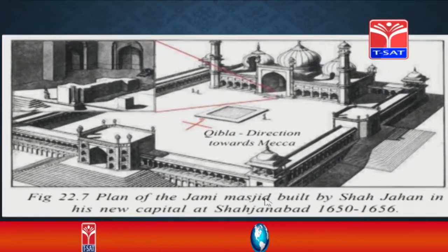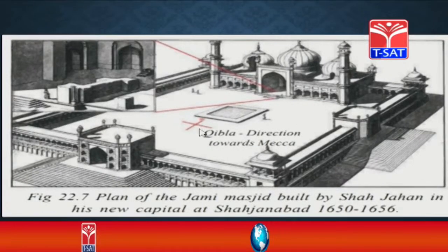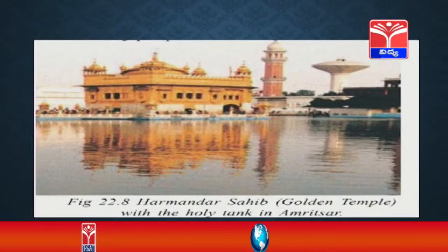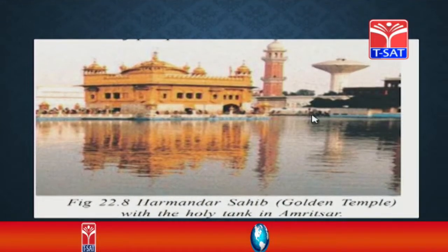The Jami Masjid was built by Shah Jahan in his new capital Shahjahanabad in the year 1652–1656. If you closely observe this image, there is the Qibla direction — the direction towards Makkah. The Qibla direction is the direction to which all Muslims pray, because Makkah is in that direction; praying towards that wall, they feel they are praying to Allah. Also, the Harmandir Sahib — the Golden Temple — at Amritsar is attached with a holy tank for the people. It is the beautiful temple of the Sikhs.